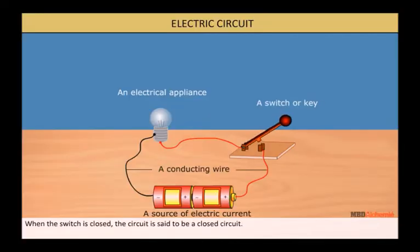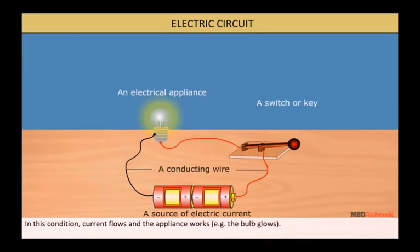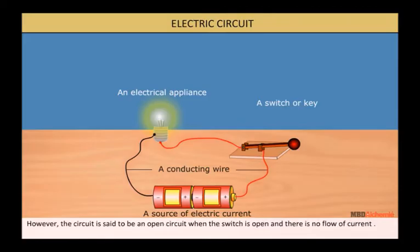When the switch is closed, the circuit is said to be a closed circuit. In this condition, current flows and the appliance works. The bulb glows. However, the circuit is said to be an open circuit when the switch is open and there is no flow of current.